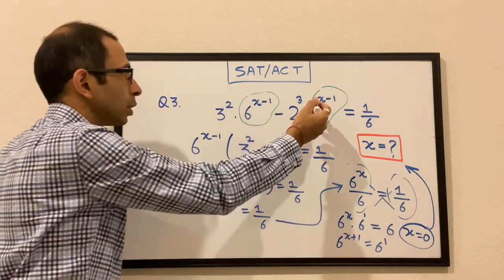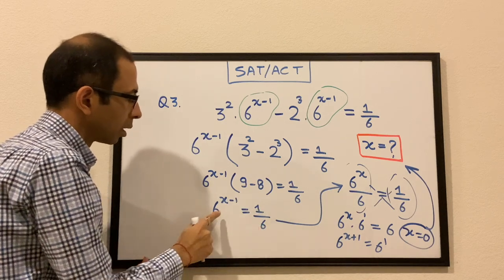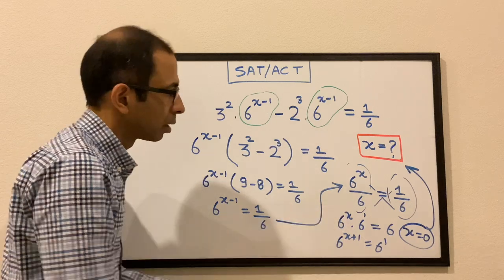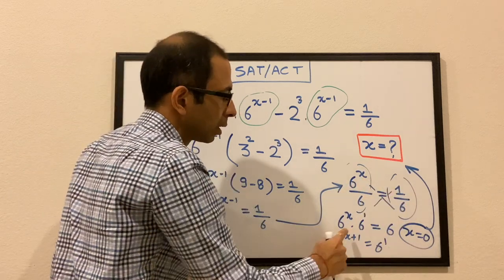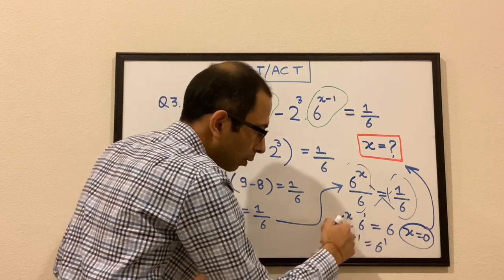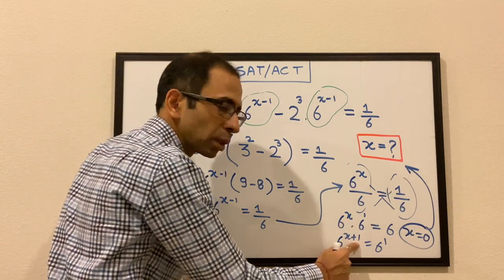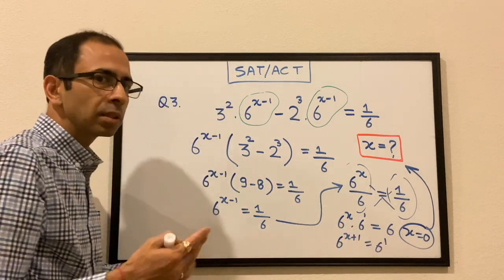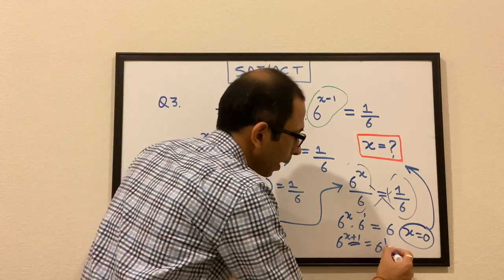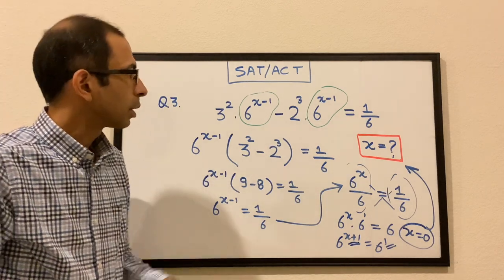To recap: we factored out 6^(x−1), simplified to get 6^(x−1) = 1/6, rewrote it as 6^x / 6 = 1/6, cross-multiplied to get 6^(x+1) = 6¹, and since the bases are the same, x + 1 = 1, giving x = 0.